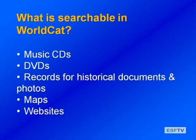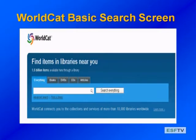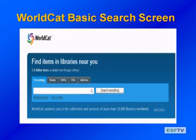When you first get into WorldCat, you'll see the basic search screen and you can use that option. Or there's an advanced search option where you can put on lots of limits. But not to worry — if you do the basic search, you can actually go in afterwards and put on some limits.